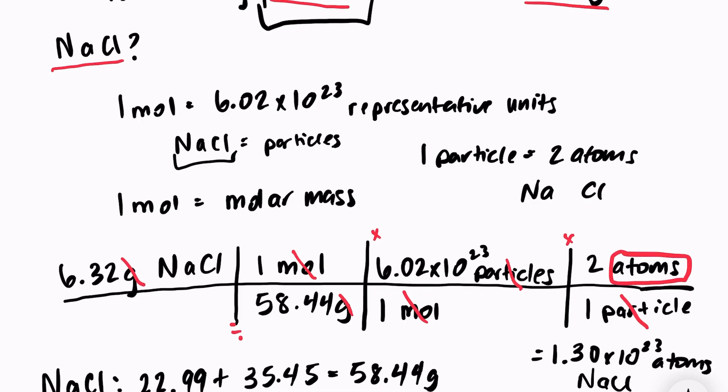So just to refresh, we went from grams into atoms. We had to use our normal two unit conversions: 1 mole equals 6.02 times 10 to the 23rd, and 1 mole equals molar mass. We had to use this extra conversion because NaCl is not an atom, it is a particle.